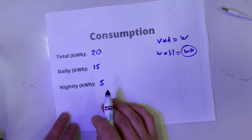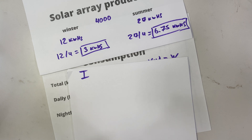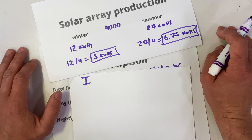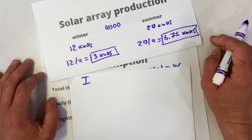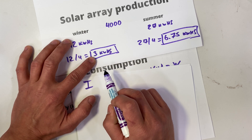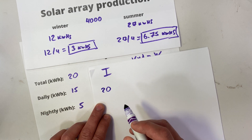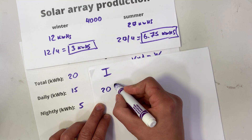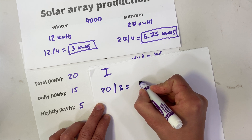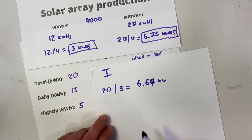I'll show two examples. Example one: you're building a system for an RV or cabin with no grid power, so you need to cover your needs all year. We use the winter production figure of 3 kilowatt hours per day per kilowatt of panels. To cover 20 kilowatt hours per day, divide 20 by 3 — that gives us 6.67 kilowatts. That's how large our solar array should be.